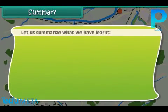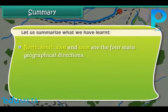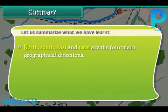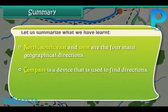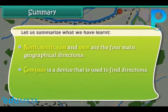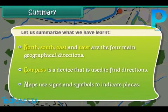Let us summarize what we have learned. North, South, East and West are the four main geographical directions. A compass is a device that is used to find directions. Maps use signs and symbols to indicate places.